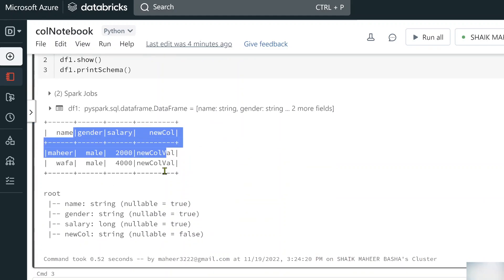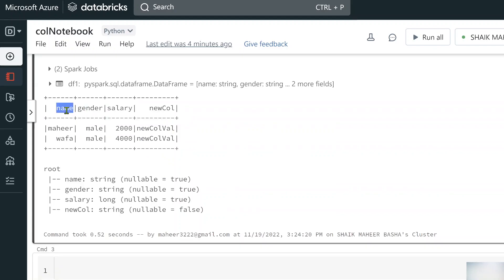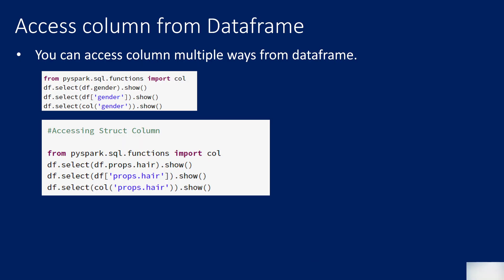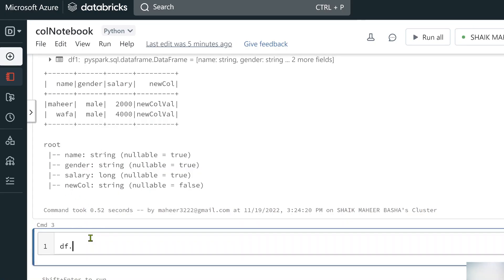Now, assuming we have this DataFrame, let's look at the various ways to access a specific column like 'gender' or 'name'. There are multiple approaches: you can use `df.column_name` dot notation, an indexed syntax like `df['column_name']`, or the `col()` function to refer to and fetch a column from a DataFrame.